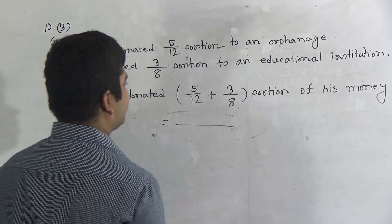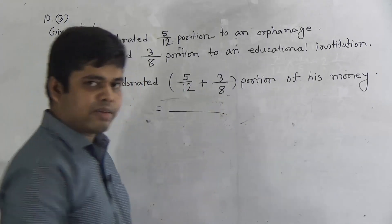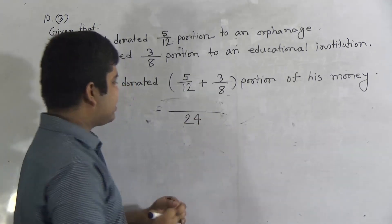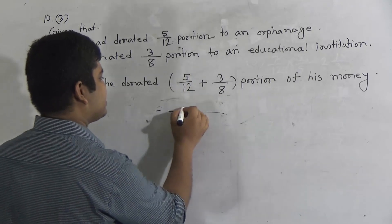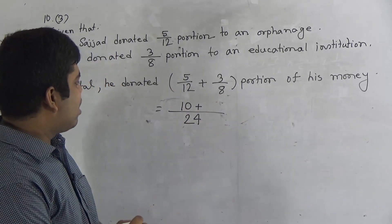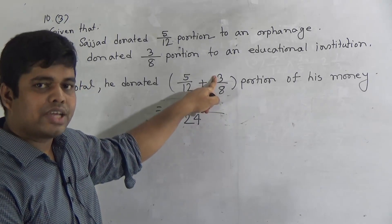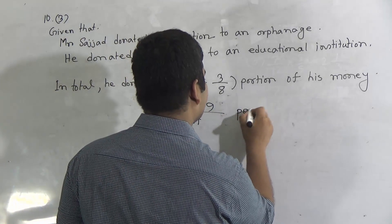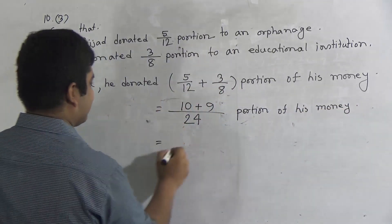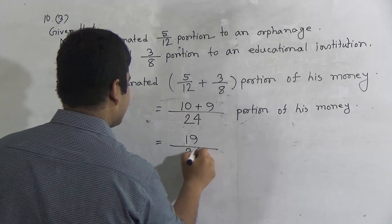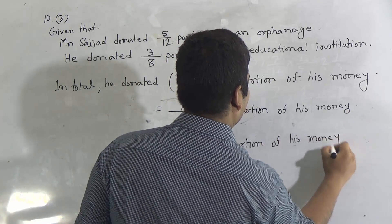Now we do addition. At first, we find out the LCM of the denominators. Here 12 and 8, LCM is 24. We divide 24 by 12 and get 2. That 2 is multiplied with 5 and we get 10. Then we divide 24 by 8 and get 3. That 3 is multiplied with the numerator 3, giving 9. That means 10 plus 9 portion of his money. We add the numerators: 10 plus 9 equals 19. So he donated 19/24 portion of his money.